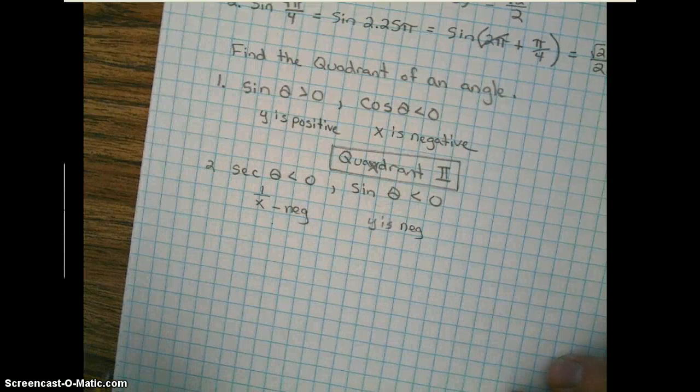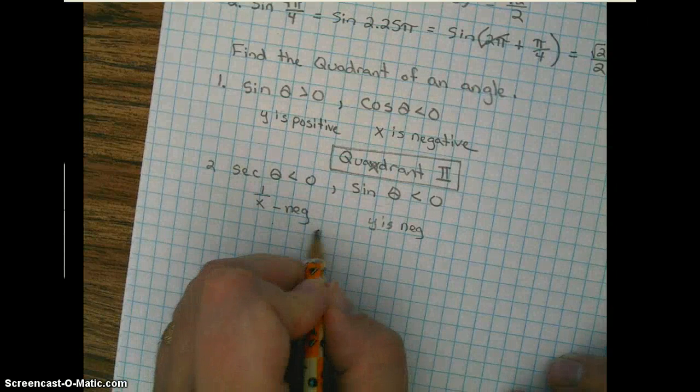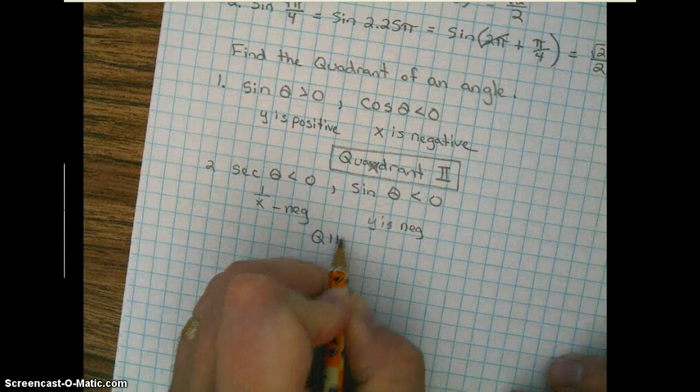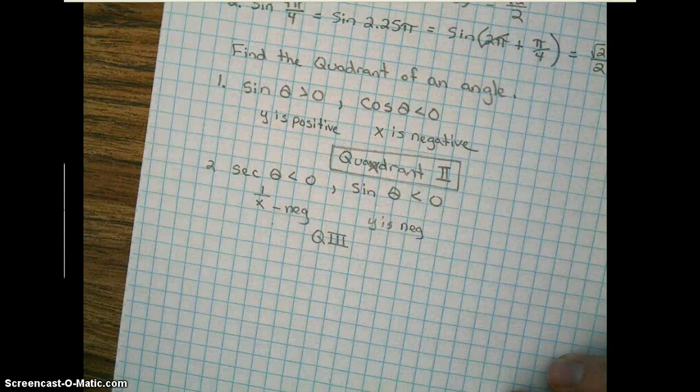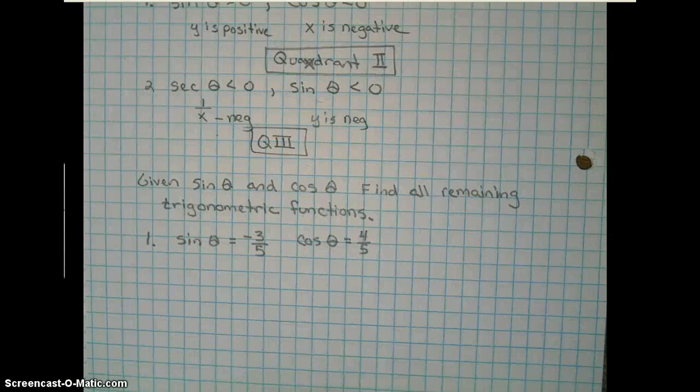So what quadrant are both our x and y negative? Check your unit circle if you do not know. So hopefully you have this memorized. Quadrant 3. All right, next topic.